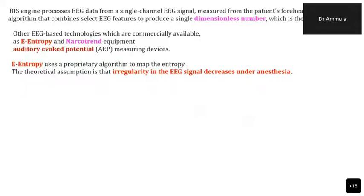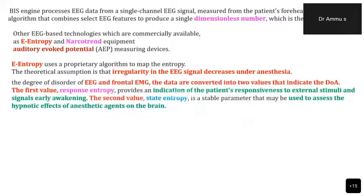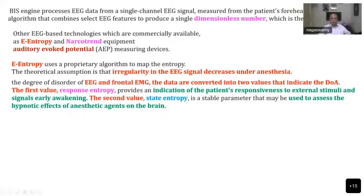Resuming with the slides: the complex EEG waveforms were broken down into simple sine waveforms, analyzed and processed, and you get a dimensionless number in the BIS index. Later, entropy, narcotrend, and auditory evoked potentials were introduced. Entropy simply means detecting irregularity in a system — EEG signals are irregular and this irregularity decreases under anesthesia.